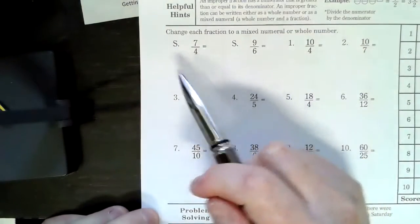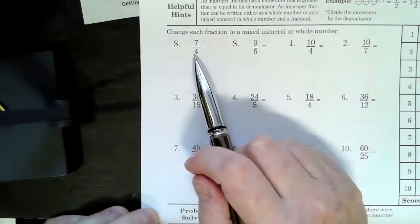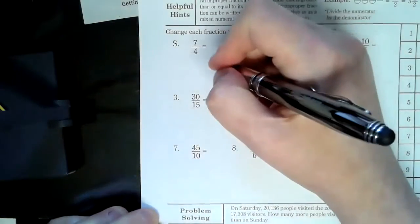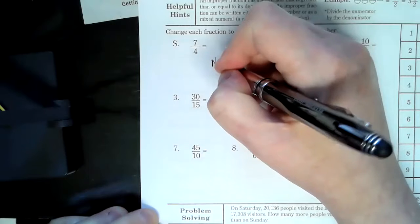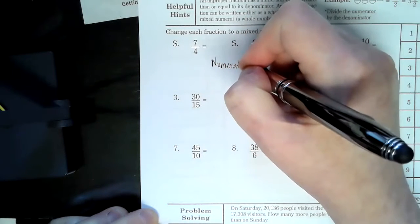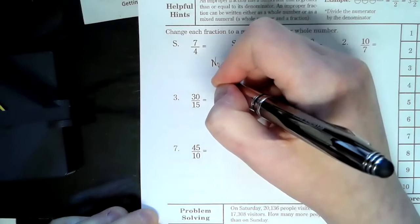Now, any time you've got a denominator that is less than the numerator, the numerator is on top, and the denominator is on the bottom.